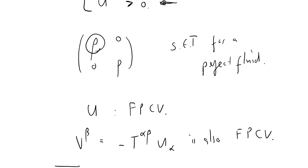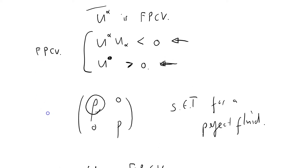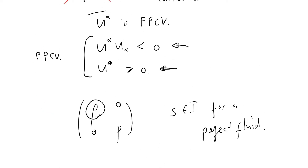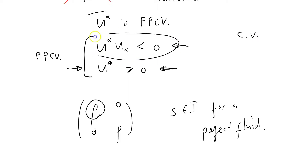General relativity, step by step. I've been looking at the dominant energy condition, and I've looked at this requirement of a future pointing causal vector. CV is a control volume — that's why I stuttered on this one. So now I'm going to look at this condition here.